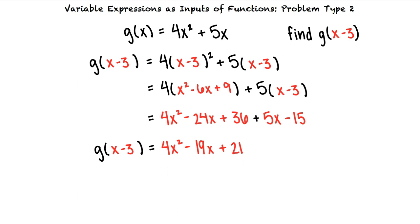This final answer tells us that when our input is x minus 3, our output is 4x squared minus 19x plus 21.